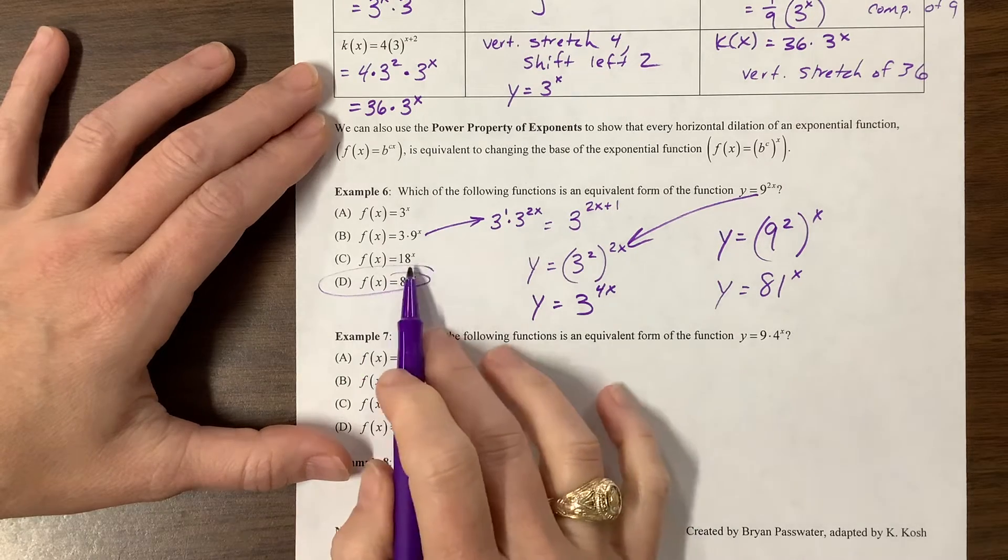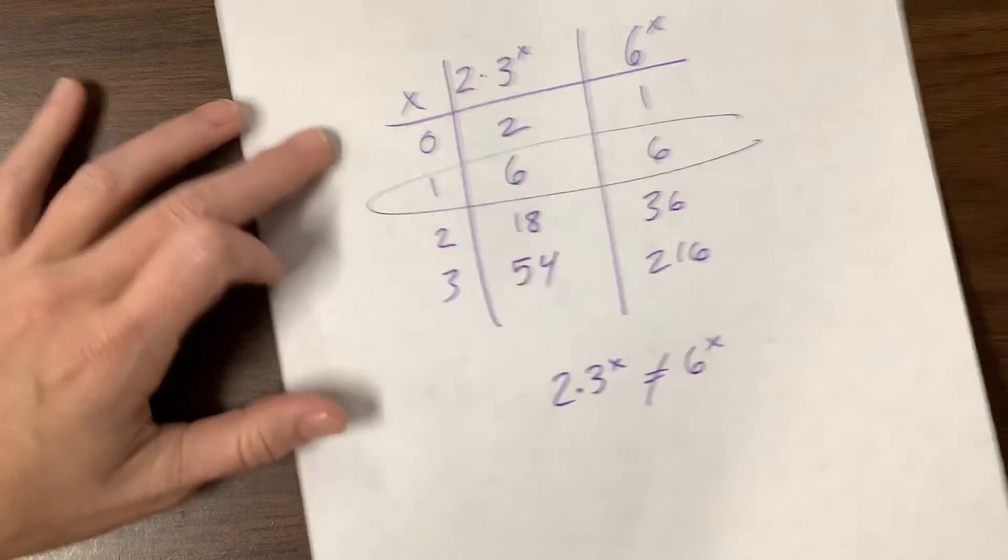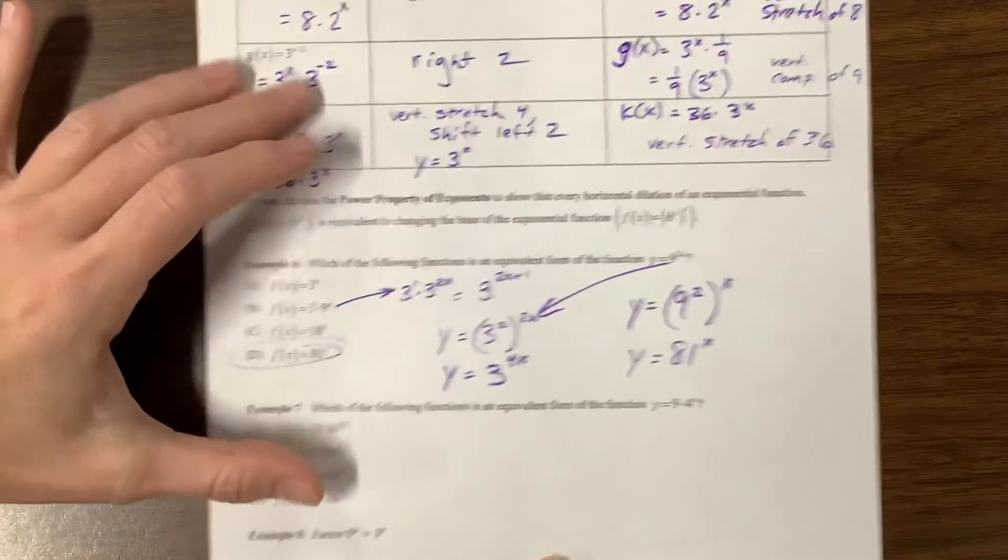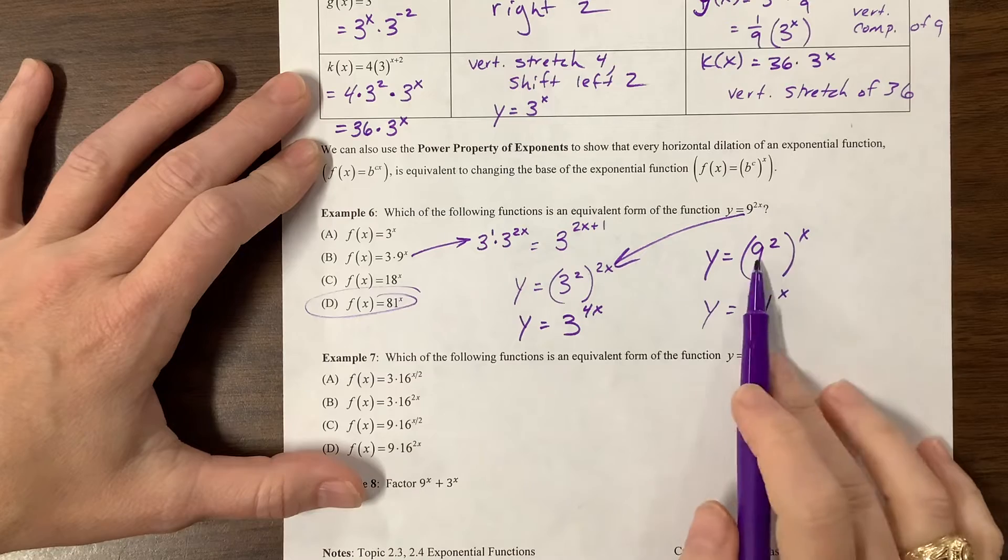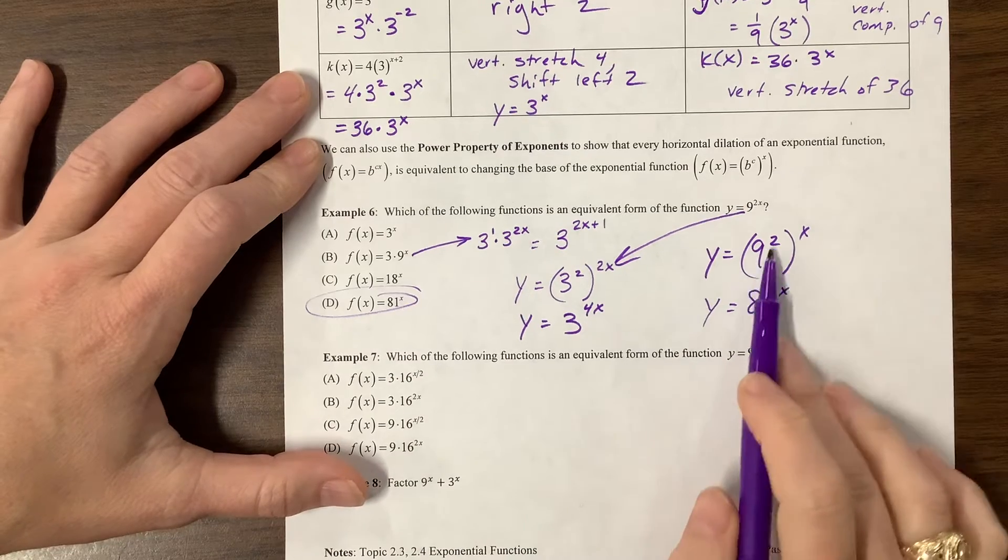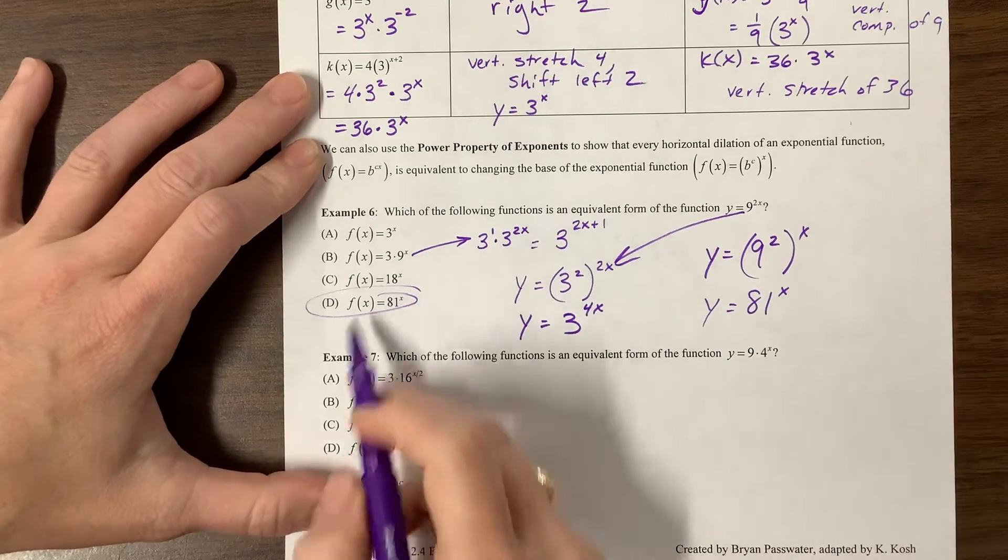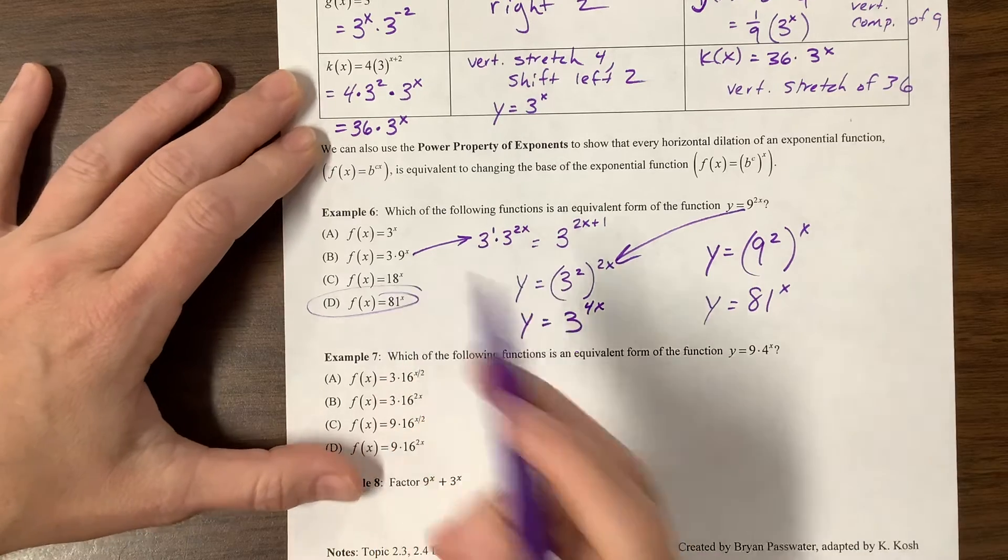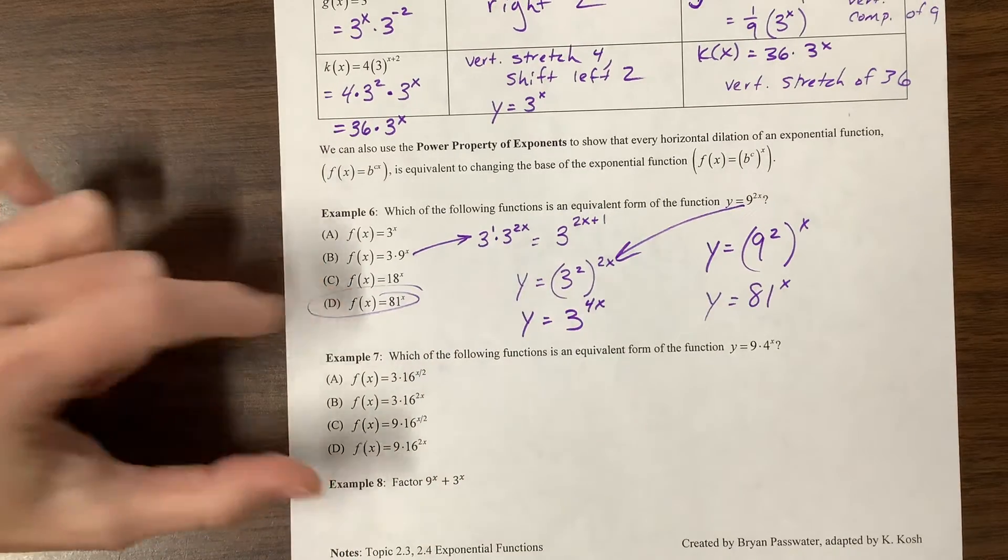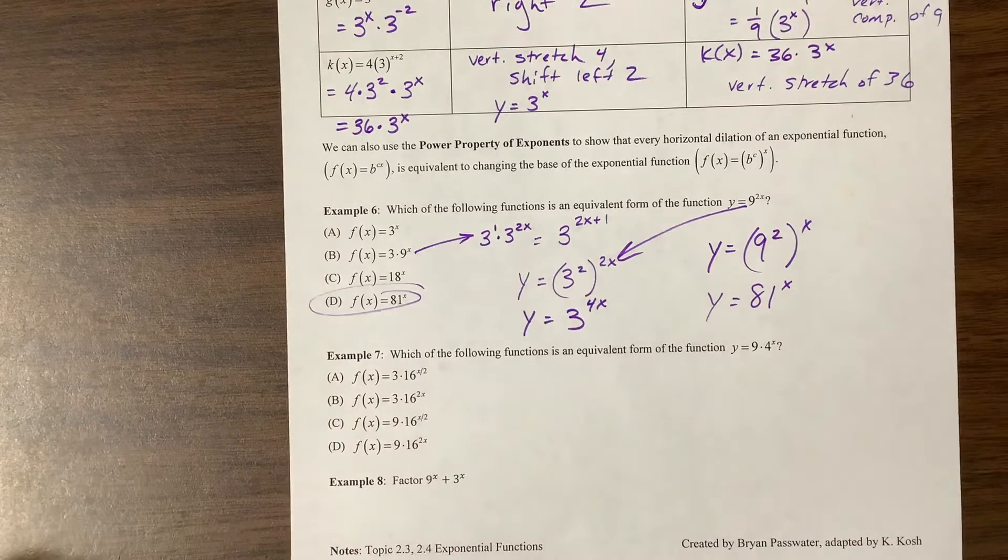This would be, we could rewrite this one if we wanted, as 3^1 times 3^(2x), because that's 3^2 to the x. We could rewrite that as 3^(2x+1), but that's not equivalent to anything we have so far. 18 to the x. Oh, this is what we talked about too. So don't start multiplying weird things like that. Or no, I don't know where they got 18. I guess this 9 times 2 is 18, but 9^2 is definitely not 18. That's a good distractor, but yikes, don't guess that one. That's like the worst of the bunch. Anyway, the correct answer is D.